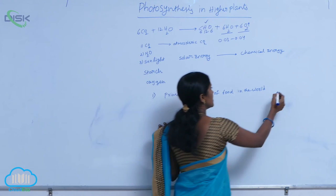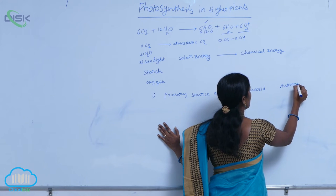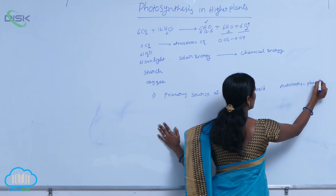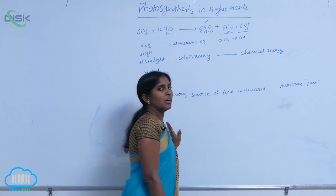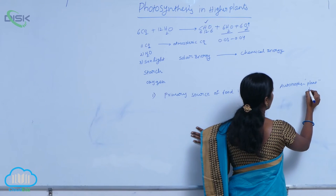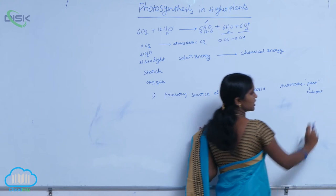the autotrophs are primary producers. The primary producers are autotrophs. What are autotrophs? The plants are called autotrophs because plants do not depend on another plants. They are independent, independent for their food production.